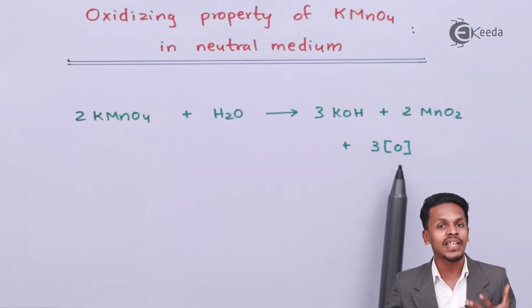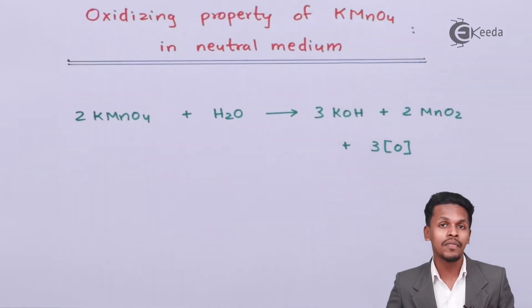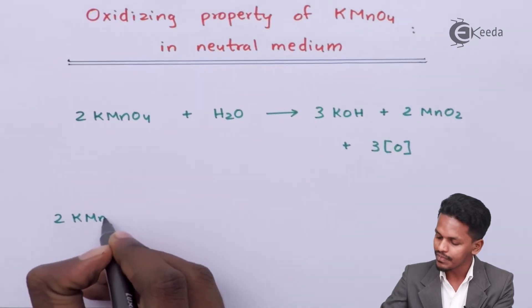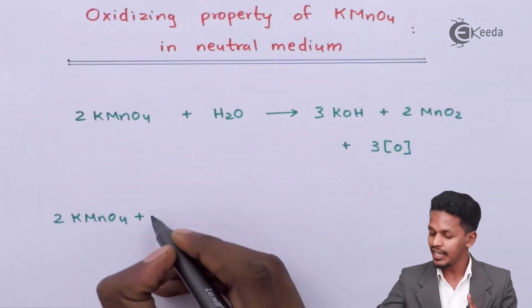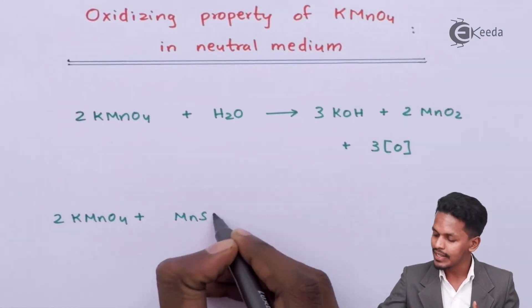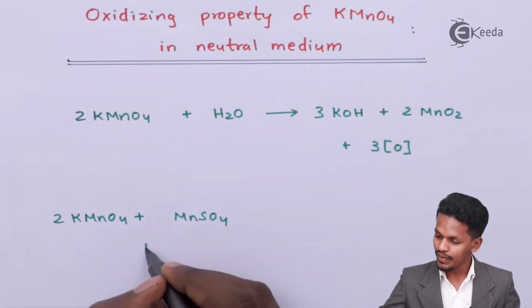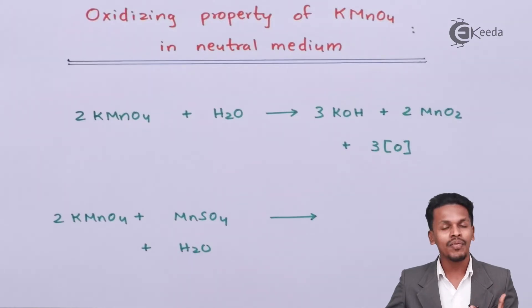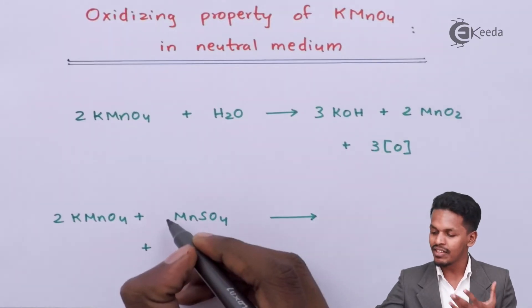Based on this, KMnO4 produces 3 moles of nascent oxygen atom. Suppose if this 3 moles of nascent oxygen atom is treated with other molecules, for example, 2 moles of KMnO4, and suppose if we are treating it with MnSO4, that is manganese sulfate, along with water.